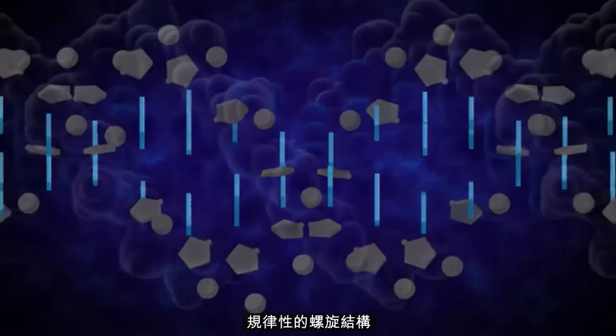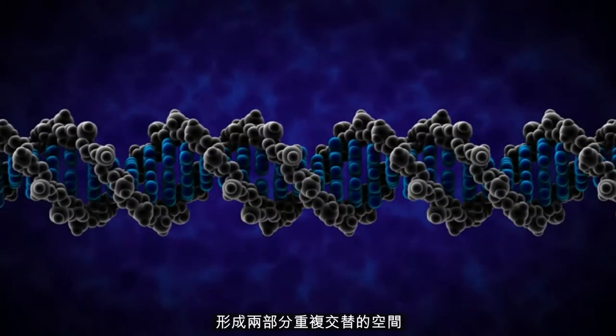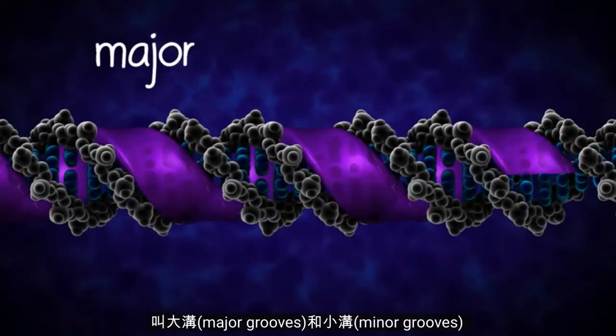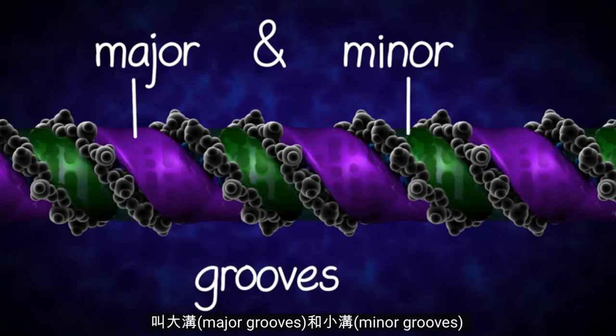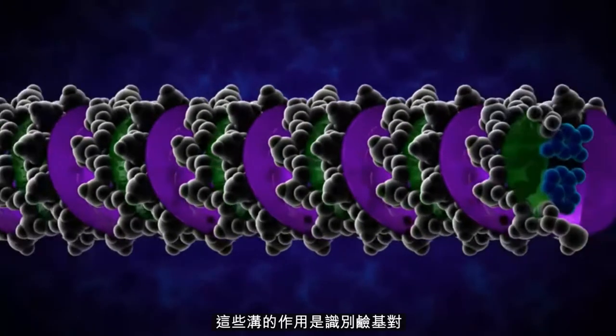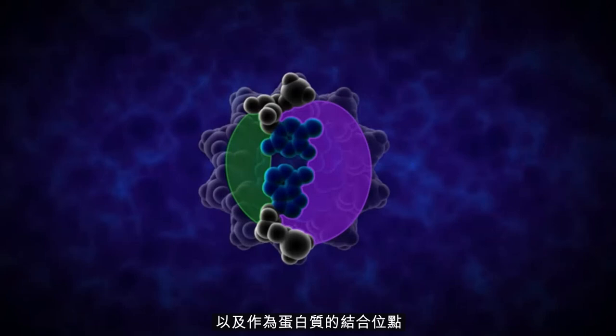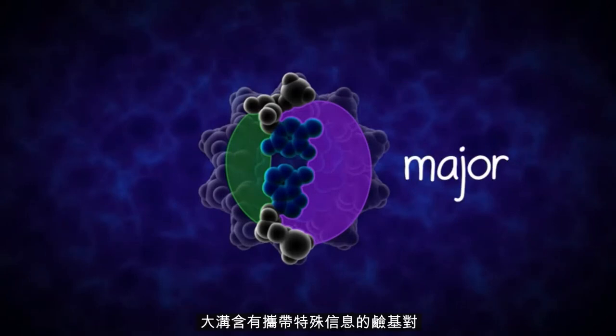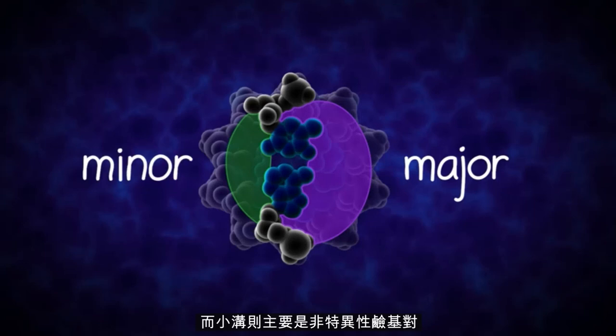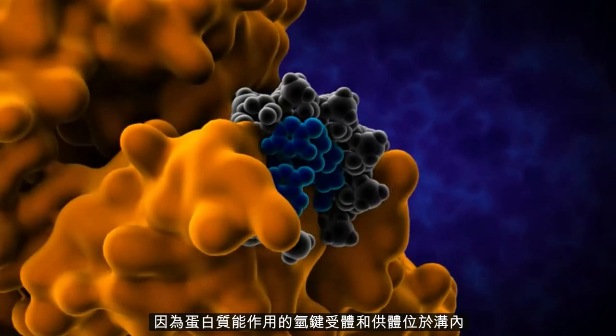The regularity of the helical structure forms two repeating and alternating spaces called the major and minor grooves. These grooves act as base pair recognition and binding sites for proteins. The major groove contains base pair specific information, while the minor groove is largely base pair non-specific. This is because of the patterns of hydrogen bond acceptors and donors that proteins can interact with in the grooves.